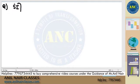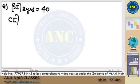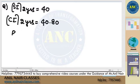SI for 2 years is 40. CI for 2 years is 40.8. Find our percentage. Very easy question.